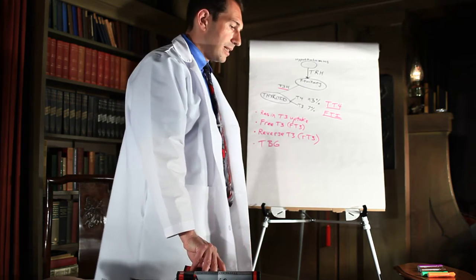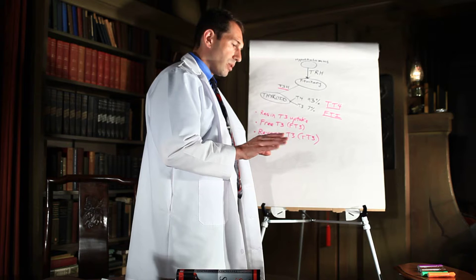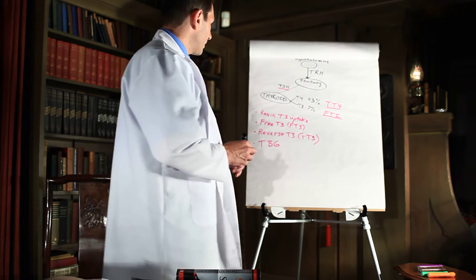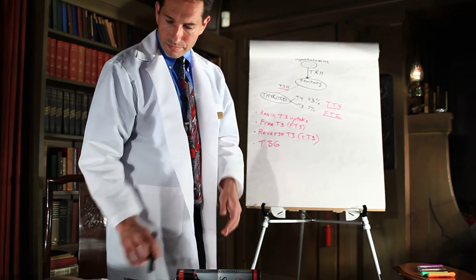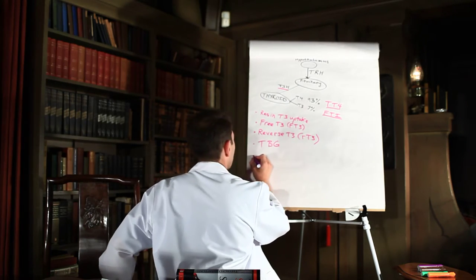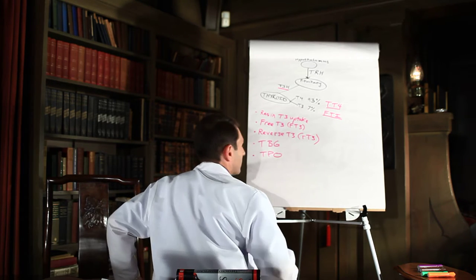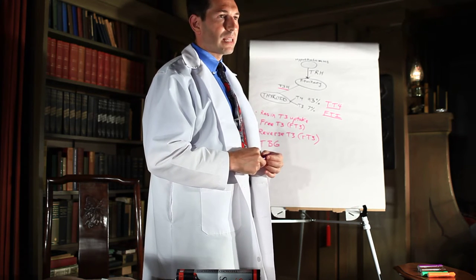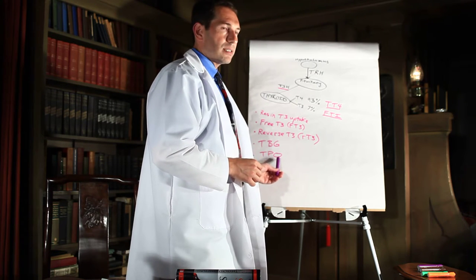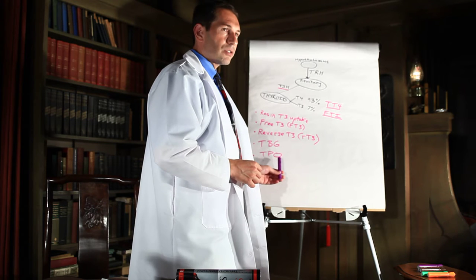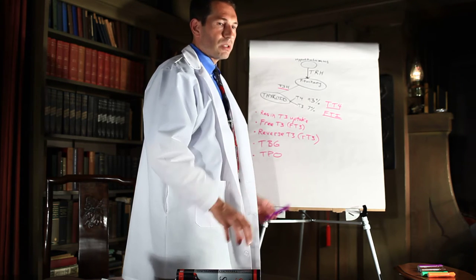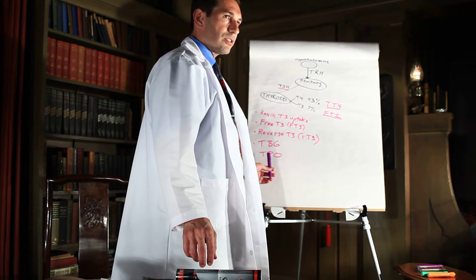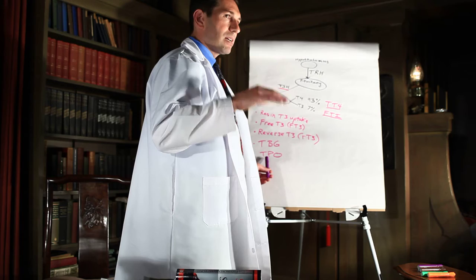The enzyme that converts T4 into T3 is called thyroid peroxidase. We need to look at thyroid peroxidase enzyme levels, because if they're too high, that demonstrates an autoimmune thyroid condition. This is most typical in Hashimoto's thyroiditis, but you may also see elevated thyroid peroxidase enzyme in Graves' disease.